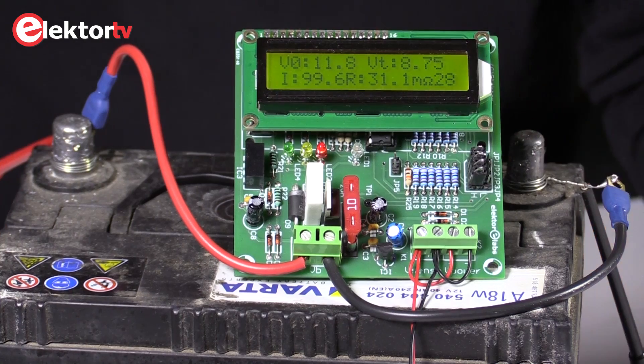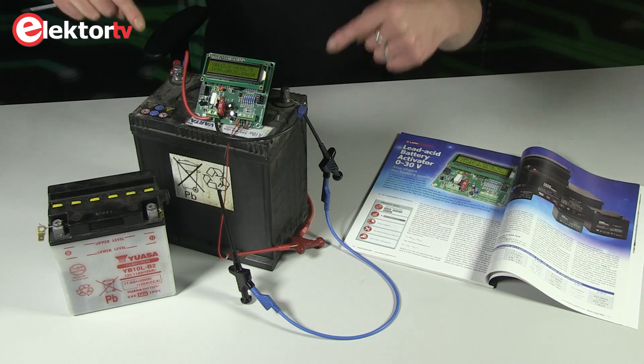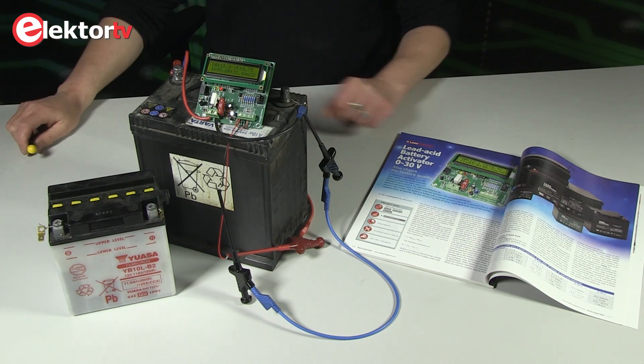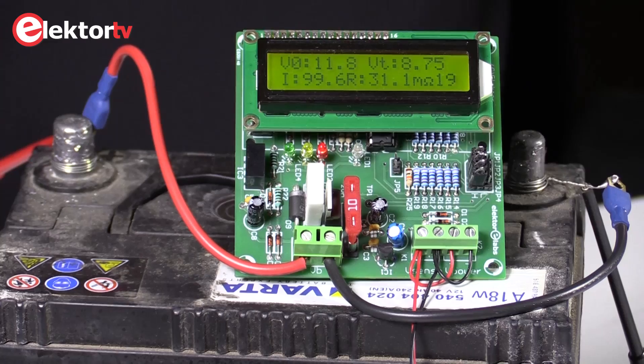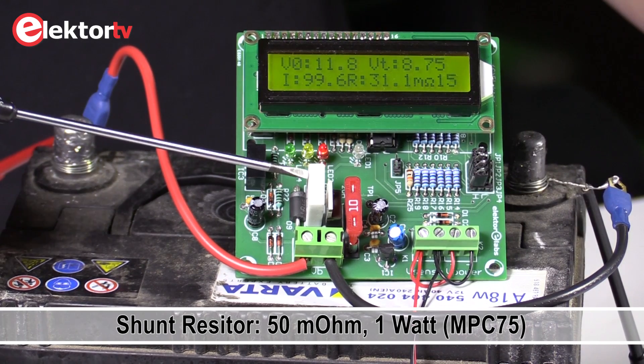There are also two wires that are used to measure the voltage on the pulse of the battery itself. The shunt resistance used is that white thing over here.